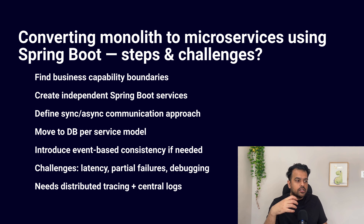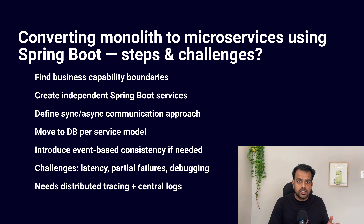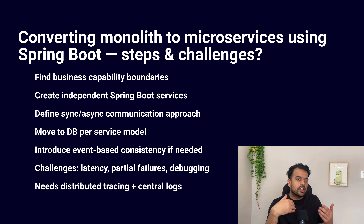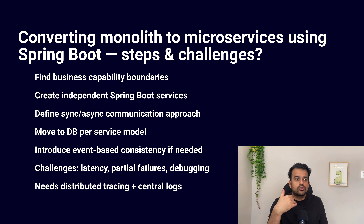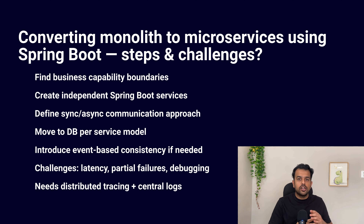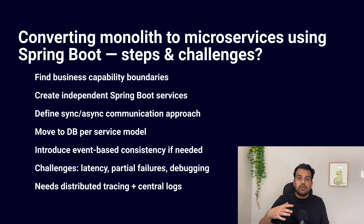Going into more detail on the first step: look at the monolith and break it into smaller business capabilities — for example, order service, payment service, inventory service, or user service. Each capability becomes one microservice with its own code and data ownership. The second step is to create a separate Spring Boot application for each microservice, each with its own build file, configuration, and deployment pipeline. The third step is to define communication between those applications — synchronous calls using REST, or asynchronous using Kafka or RabbitMQ. You also need to define which APIs each service exposes and who calls what.